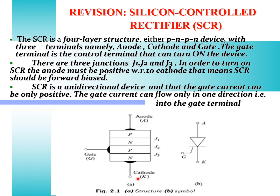SCR has three terminals: anode, cathode, and gate. When anode is connected to positive and cathode to negative, this is forward bias. In this condition, the device enters the forward blocking state — this term we must remember.